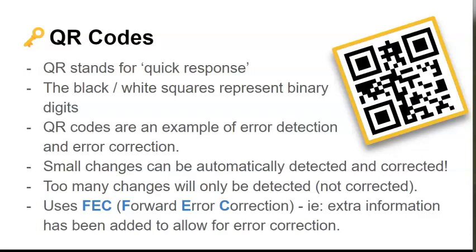In this video, we're going to learn a little bit about QR, or question response codes. The first thing you need to know is the small black and white squares represent binary digits. When these are scanned, they are translated into information.